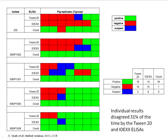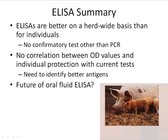On an individual test basis there was fair disagreement. The IDEXX picked up almost everybody except one; the Tween-20 didn't have great agreement with IDEXX even though we'd expect them to. Individual results disagreed 31% of the time between the two ELISAs. This reinforces using ELISA on a herd basis rather than individual pigs. You can start seeing that all these pigs were infected and had lesions, but the ELISAs don't agree on an individual pig basis, and we see that frequently.